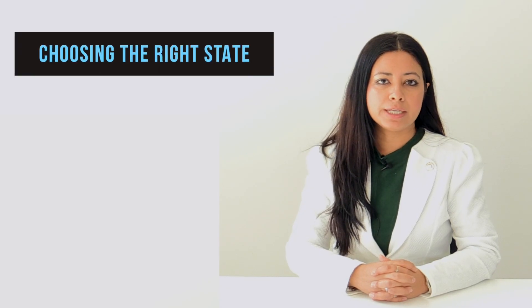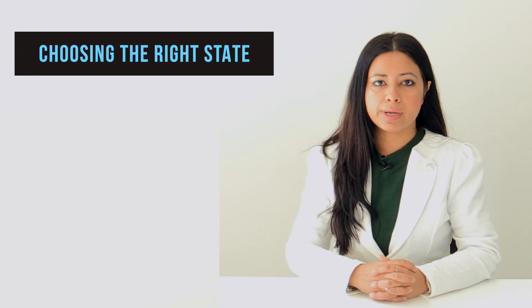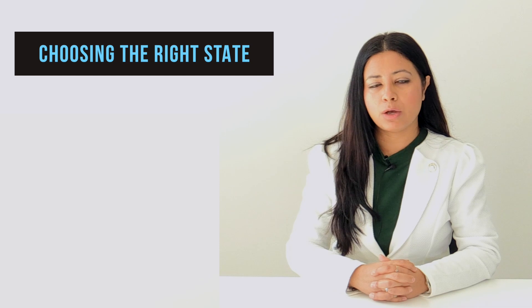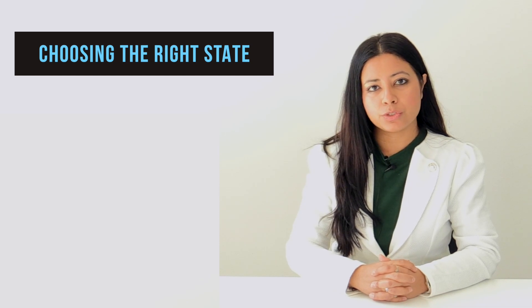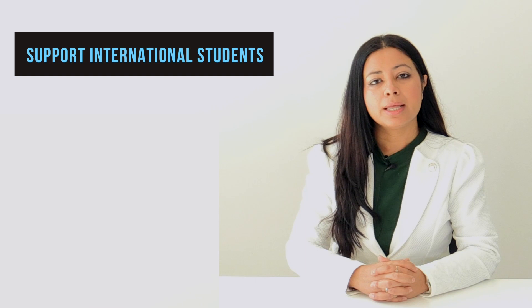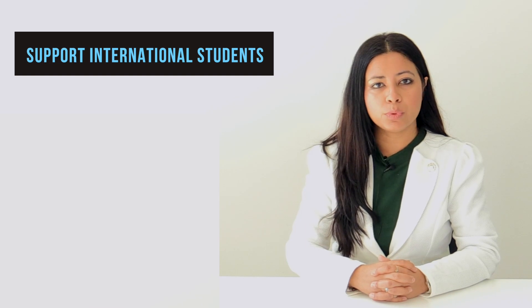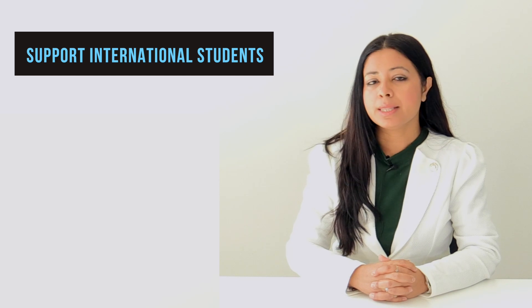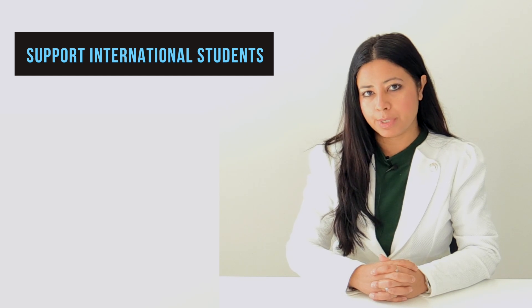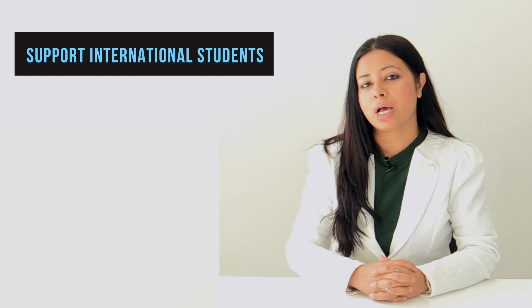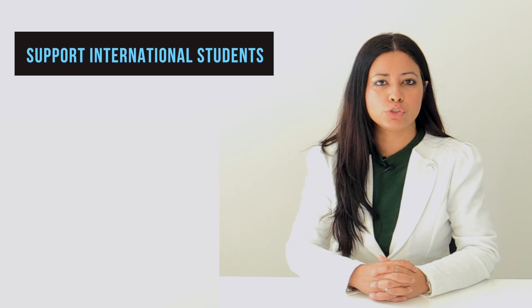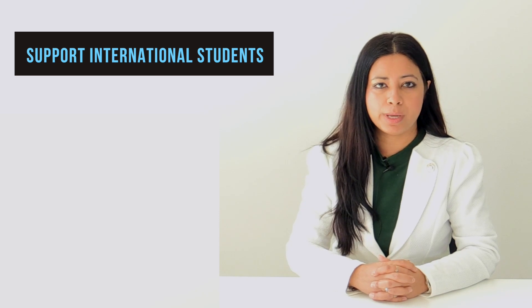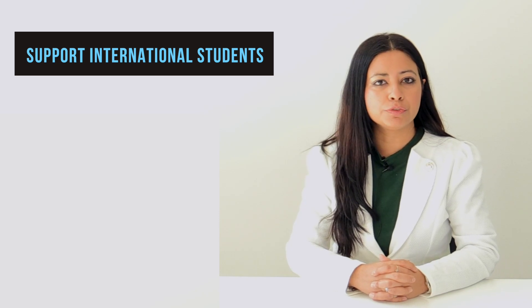The third step is choosing the right state. You'll want to find out if the state you have chosen supports their international students. Some states really support international students and, as long as you have studied there for two years, may give you the nomination. Other states will ask for work experience or a job offer letter as well. These are the things you'll need to figure out before you choose a state.